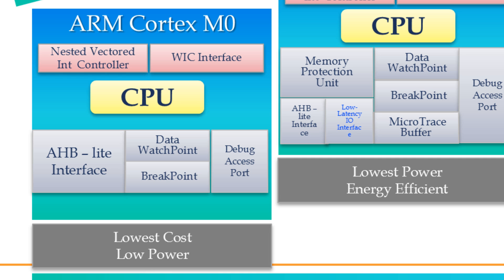Processor state is automatically saved on interrupt entry and restored on interrupt exit, even with no instruction overhead — all these things the processor does in the background. Another important feature is the Wake-up Interrupt Controller, also known as WIC. The WIC can detect an interrupt and wake the processor even from deep sleep mode, where the processor is resting in a minimum power consumption mode.